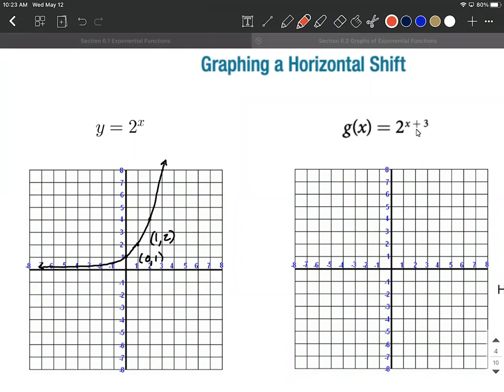When you think plus 3, normally we want to move everything to the right 3. But in this case, it's counterintuitive. This plus 3 attached directly to x will actually move everything to the left 3 units.